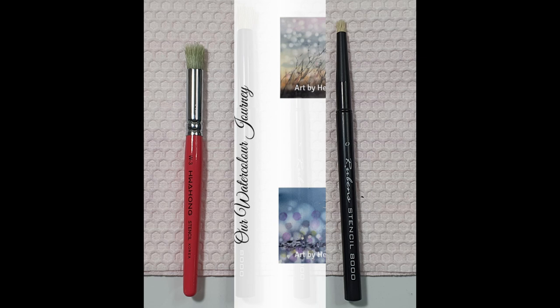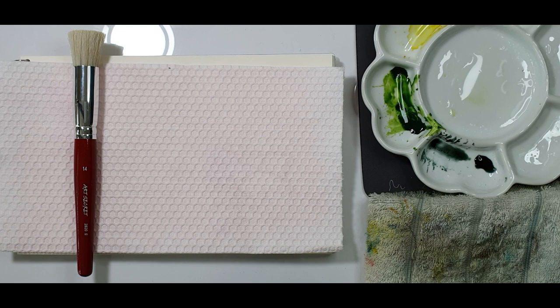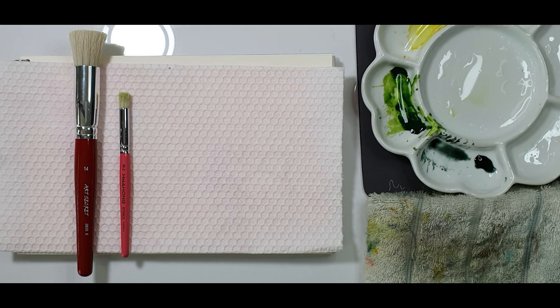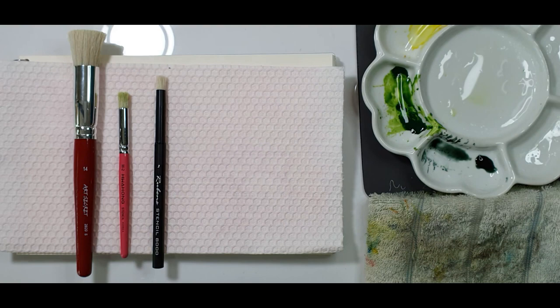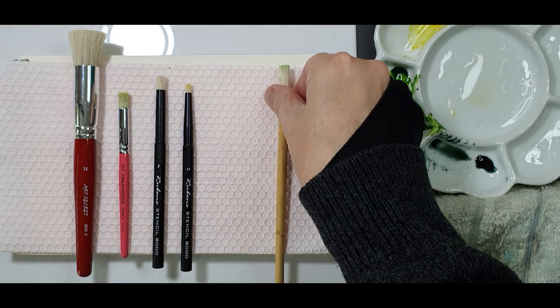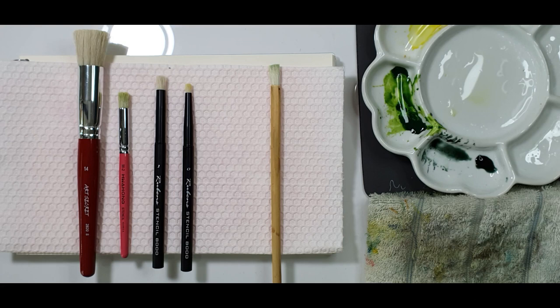Today I'm going to talk to you about the brushes that we use. We're going to start off with the Art Secret number 14 which is a very big brush. Then we have the Wahong W2, a Rubens number 1 and Rubens 0, and a no-name brand Chinese brush. These are the ones that we use in general.